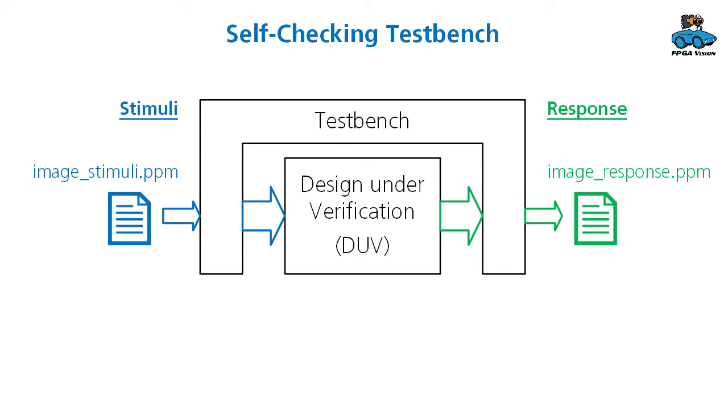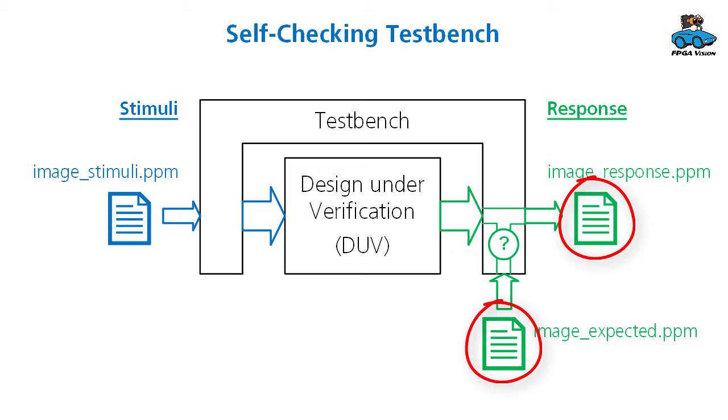The test bench handles stimuli and response. For stimuli, we read the input file and give it to the design under verification. For response, we take the output of the design and write it to the image file. And for the self-checking test bench, we now have the extension that we also read the expected image and compare it to the output of the design under verification. If the output is correct, then these two images are identical. If they are not identical, we can compare them for debugging.